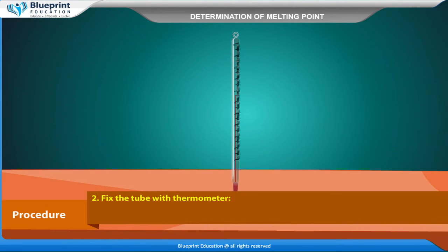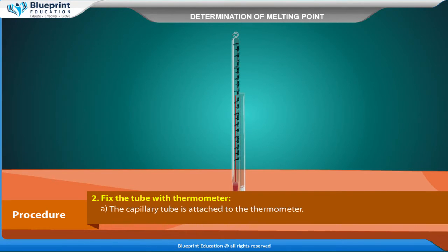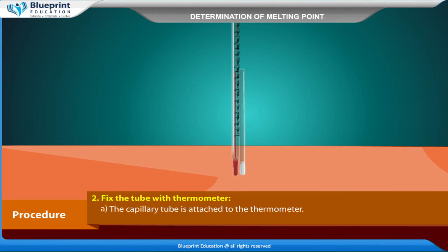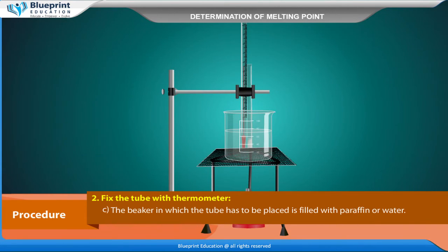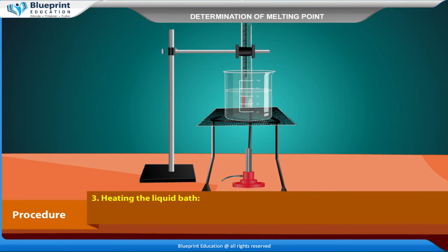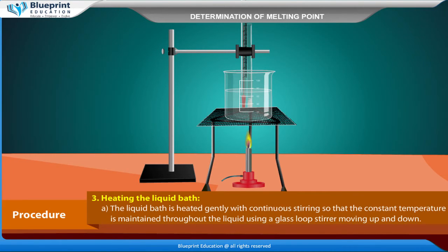Fix the tube with thermometer: The capillary tube is attached to the thermometer. The whole apparatus is arranged as shown in the figure. The beaker in which the tube has to be placed is filled with paraffin or water.